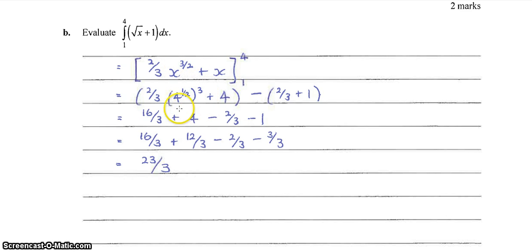Once we sub in 4 to the 3 on 2, probably the easiest way to do that is to rewrite it as 4 to the half to the power of 3. So 4 to the half is 2 to the power of 3 is 8. So that's where our 16 on 3 has come from. Put everything over a common denominator, simplify, we get 23 over 3.